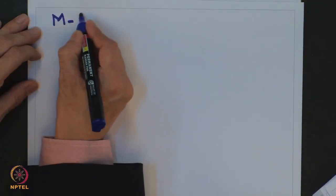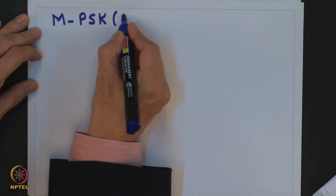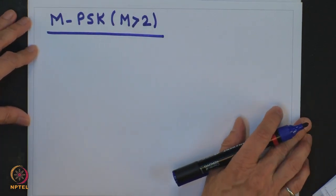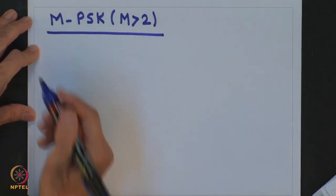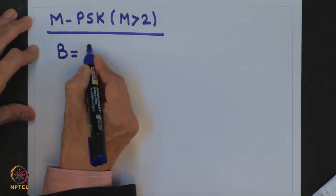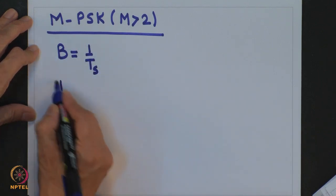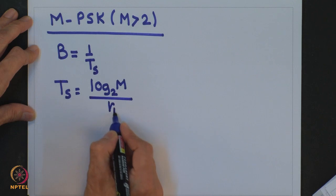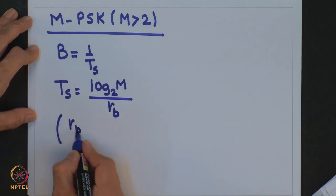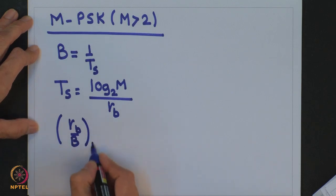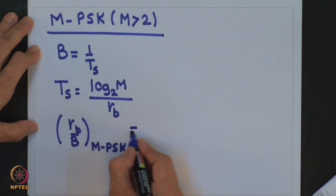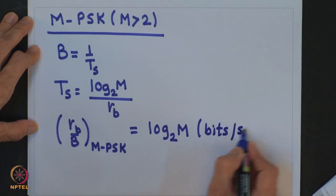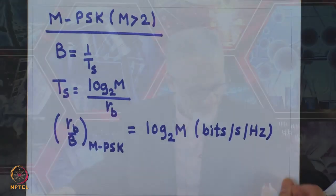For M-ary PSK with M greater than 2, we again assume ideal Nyquist filtering and double sideband transmission. The bandwidth required is 1/Ts, and since Ts = log₂(M)/Rb, the ratio Rb/B for M-ary PSK equals log₂(M) bits per second per hertz.